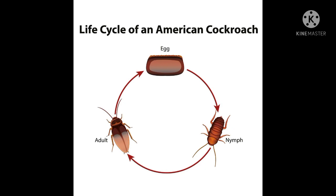At the stage of the nymph, the baby cockroach does molting — they shed off their skin. At this stage, the nymph resembles its parent. After crossing this stage, it goes to the third stage, which is the adult cockroach.